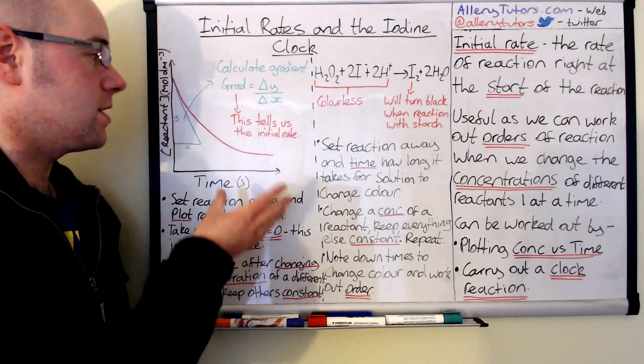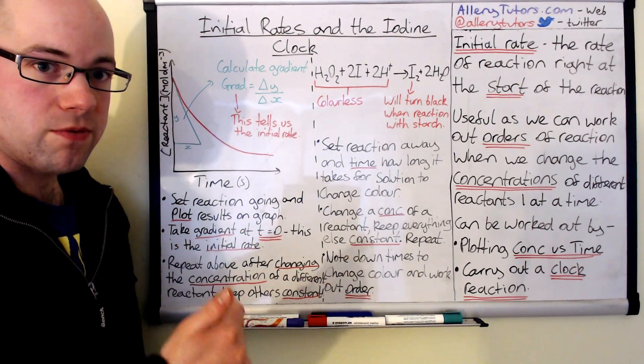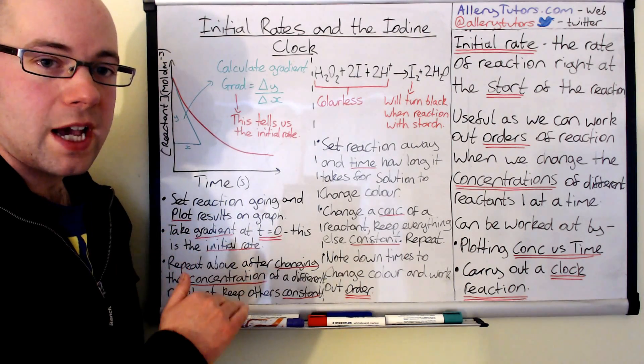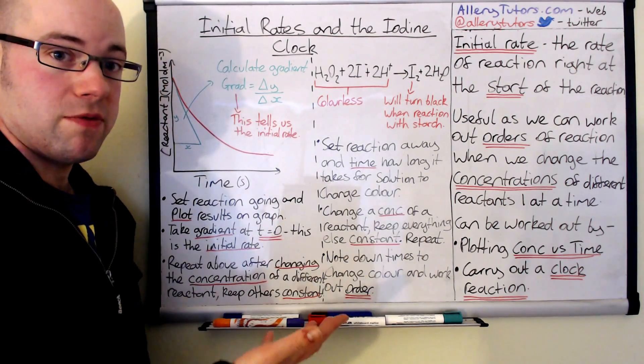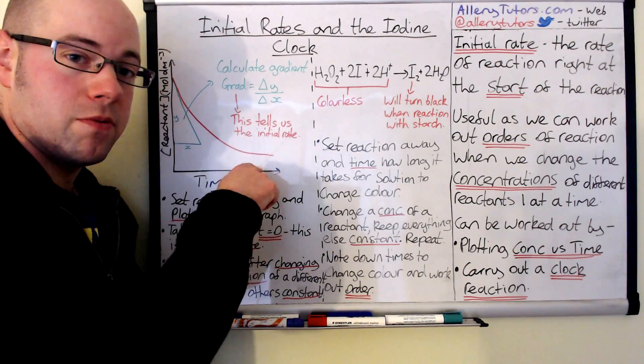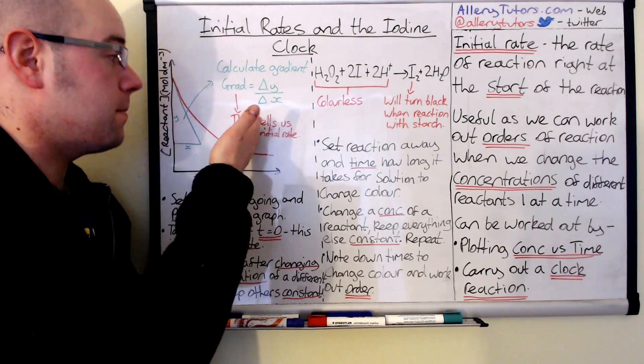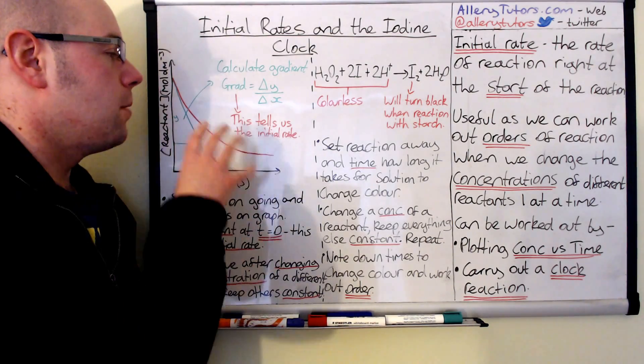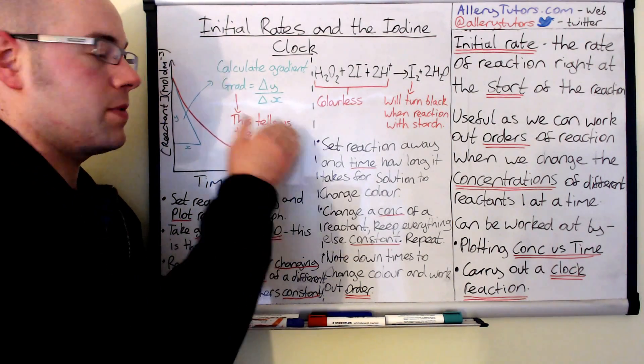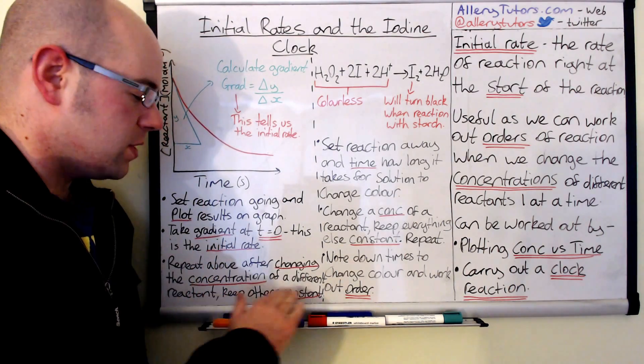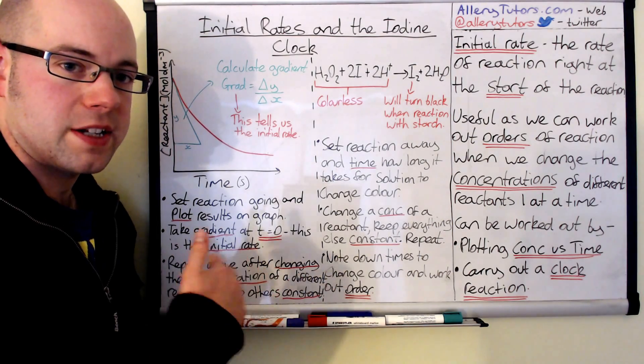The idea is that you then restart the reaction but you change the concentration of a different reactant and keep everything else the same. Then we run that reaction again and plot our results and work out the gradient to get our initial rate value. What that allows us to do is compare the initial rate of the previous reaction with this one and hence we can work out the order of reaction if that concentration change has had an effect.